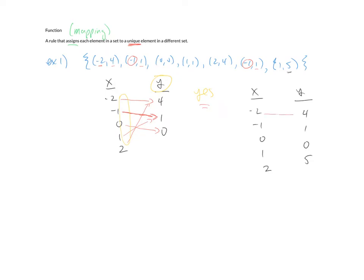We still have -2 going to 4, -1 to 1, 0 to 0, 1 to 1, 2 to 4. But this last mapping says that 1 also goes to 5, and that's where you start seeing some trouble. 1 no longer maps to a unique element in a different set. You can clearly see that 1 maps to 1 and 1 also maps to 5. This shows there's a legitimate contradiction in the definition, and what we have in example 1 then in totality would not be a function.